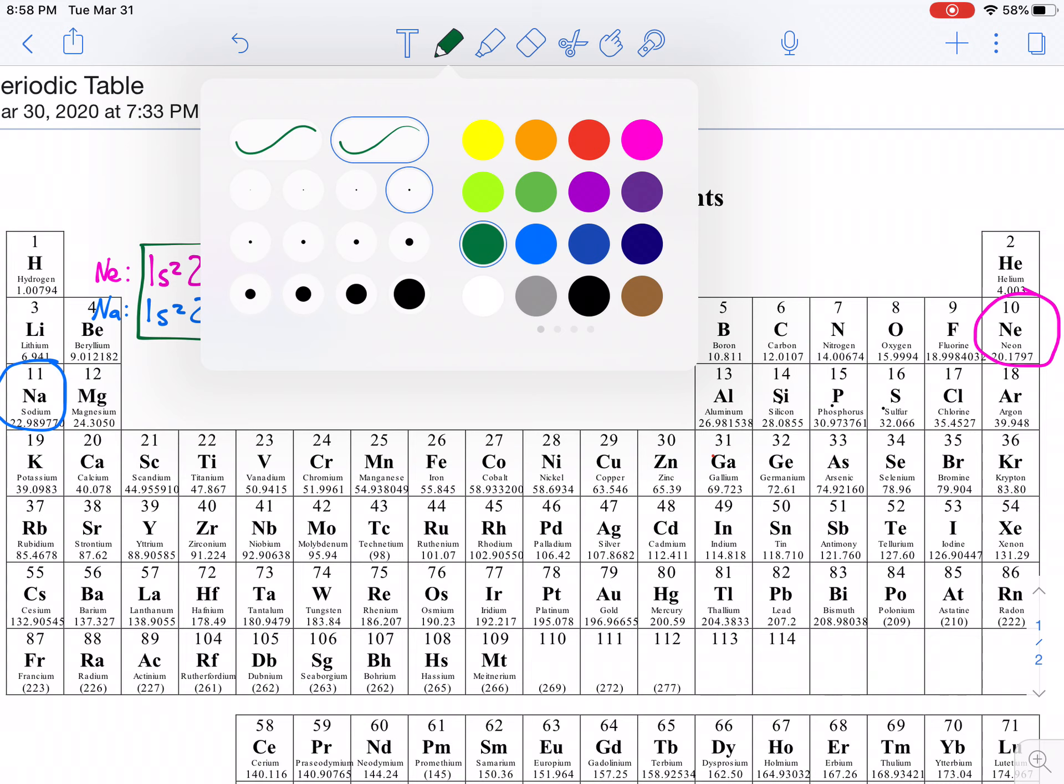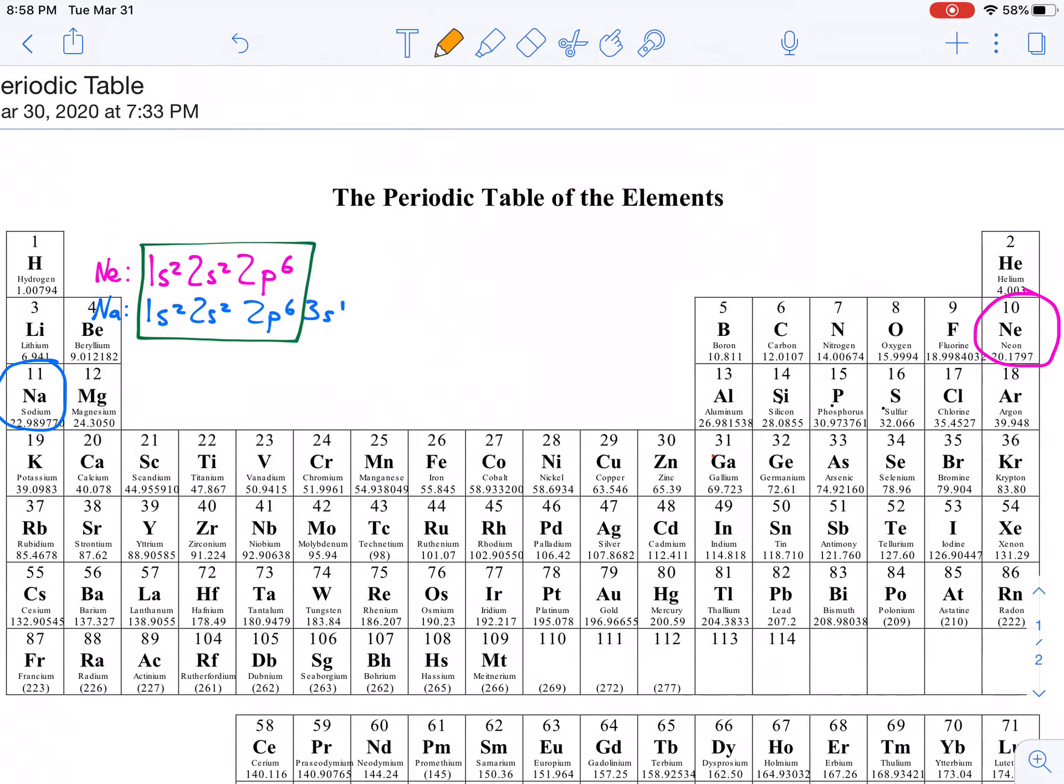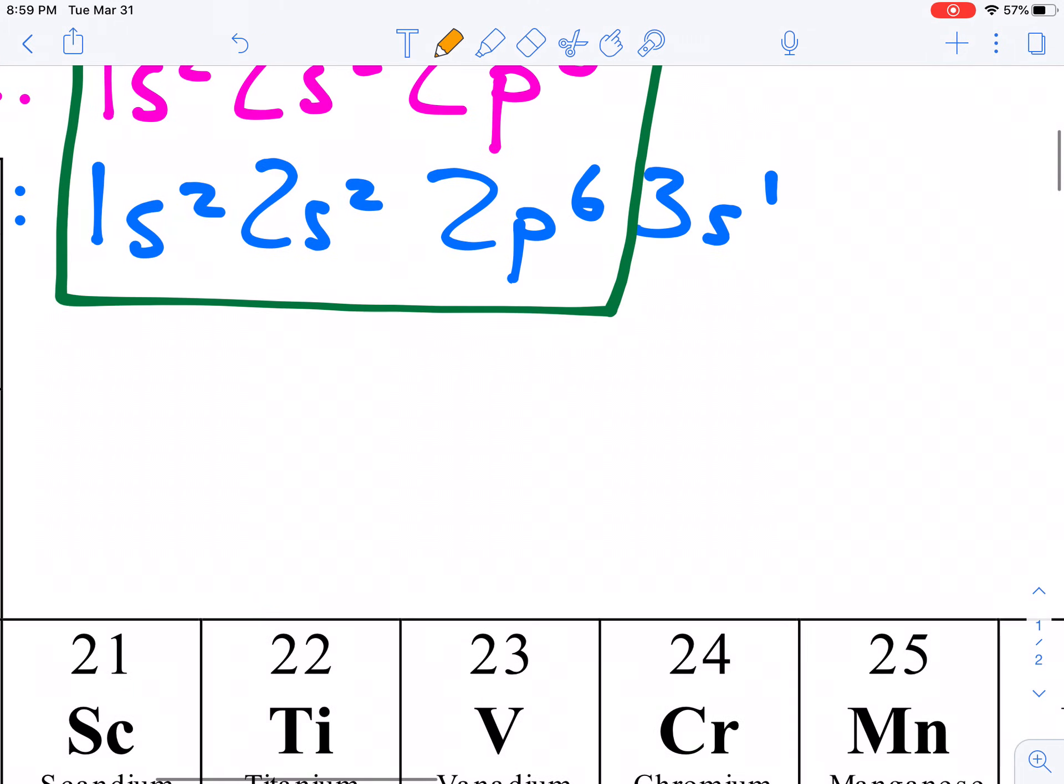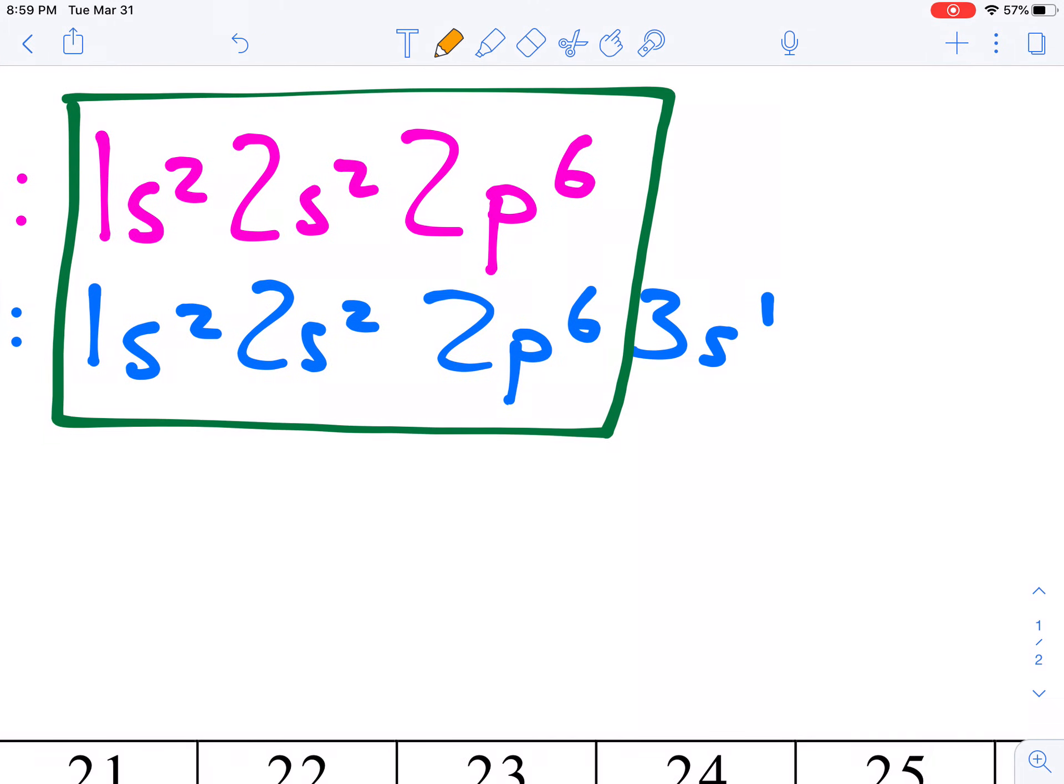For instance, sodium is number 11. If I backtrack this way, the first noble gas that I come to is number 10. Noble gases are all in this column. You want the noble gas that immediately precedes your element. And what we can do is replace this part of the electron configuration. Because this electron configuration is for neon, we can replace that with the noble gas written in brackets. So, instead of writing out 1s2, 2s2, 2p6, 3s1, we're simply going to write [Ne] 3s1.